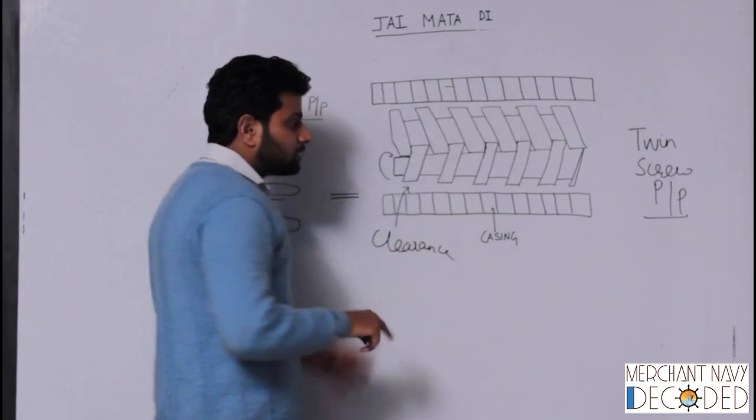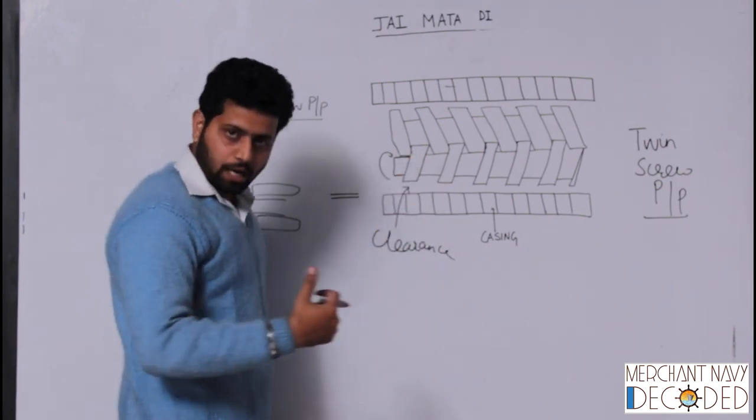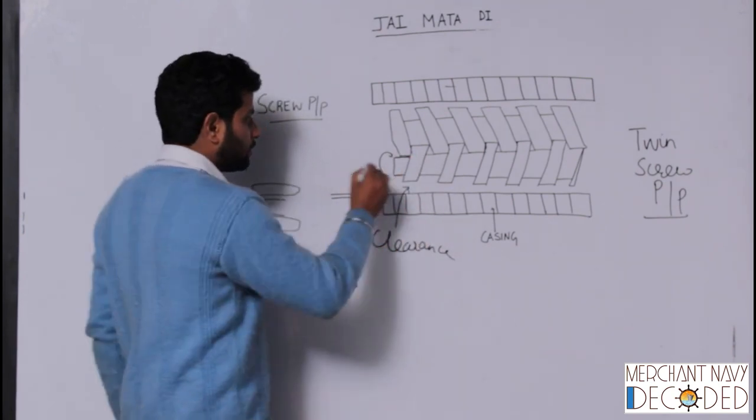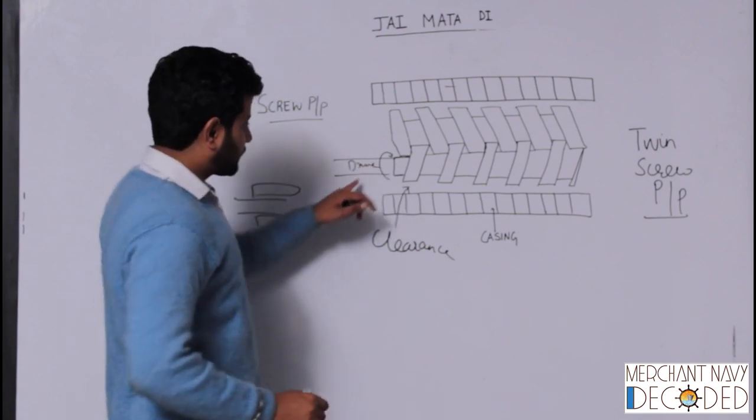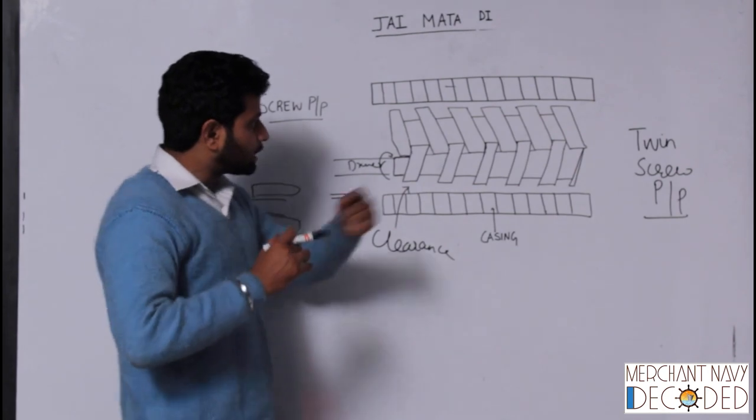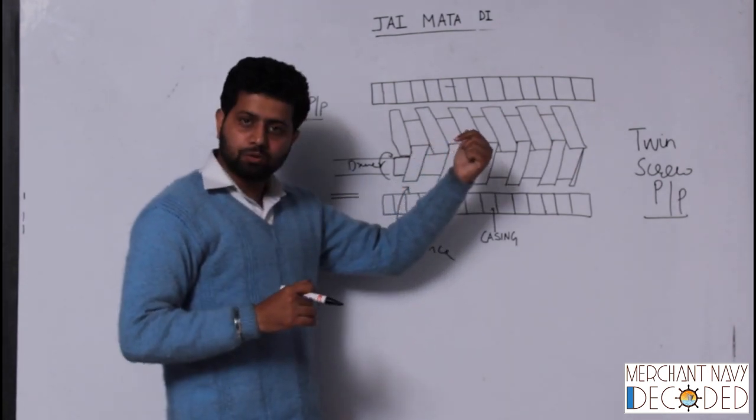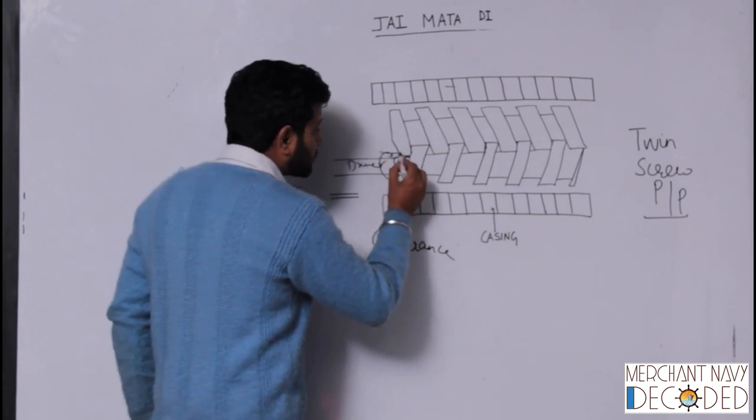This is the casing, and in between these intermesh screws are rotating. How? This is the driver shaft. So when this driver shaft is rotating, these screws are intertwined with the follower screw. It rotates that as well. So over here suction is created.